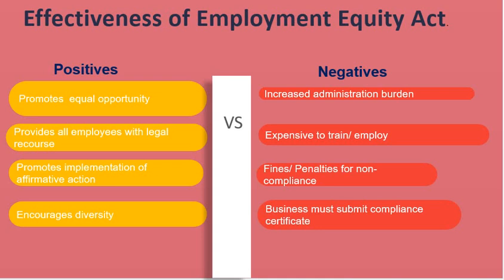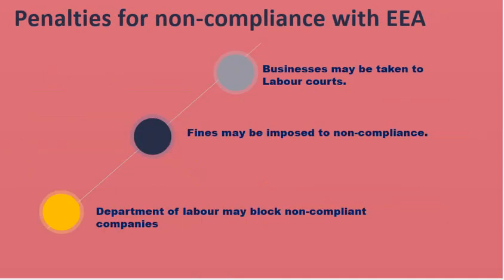Moving on to the penalties for non-compliance: businesses may be taken to the Labour Court for prosecution. Fines may be imposed on businesses that fail to comply with the reporting obligations of the Employment Equity Plan every two years. The Department of Labour may also block non-compliant companies from doing any business with the government.